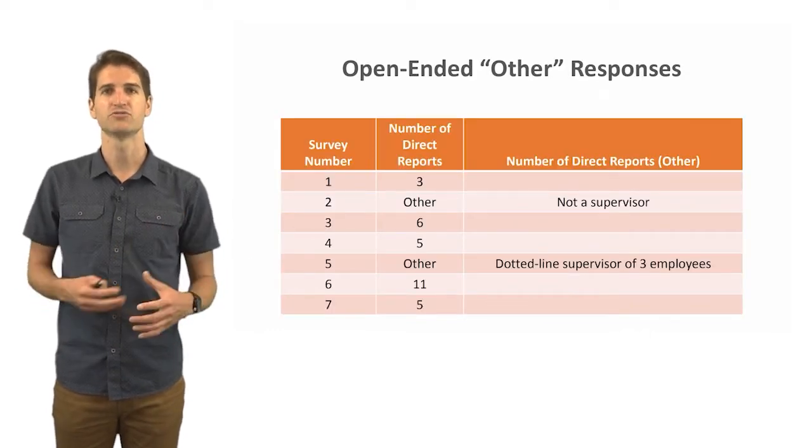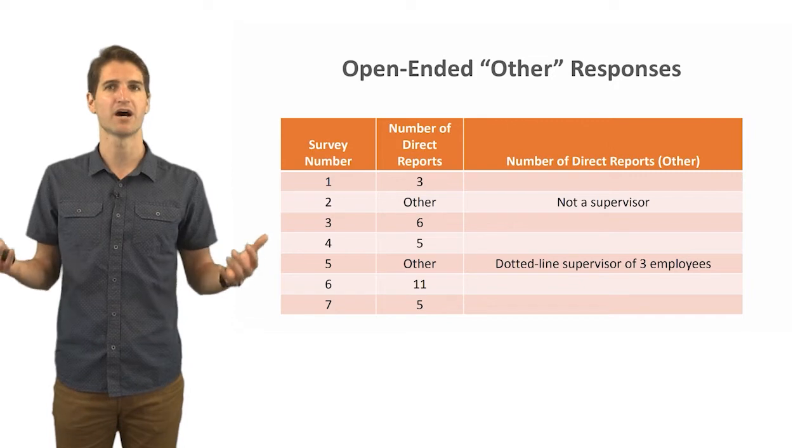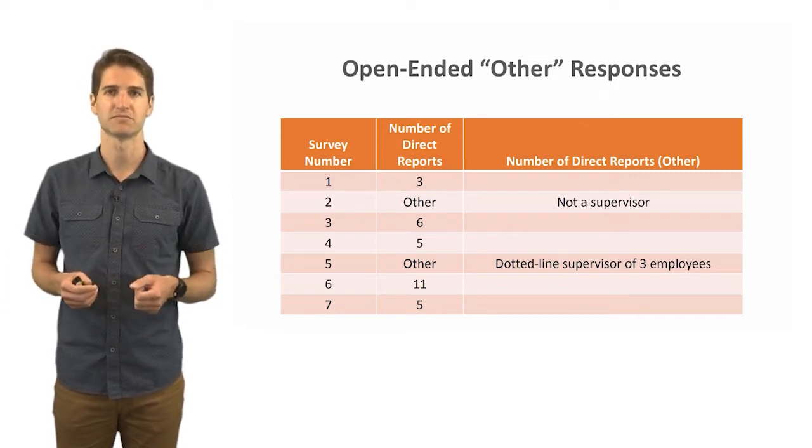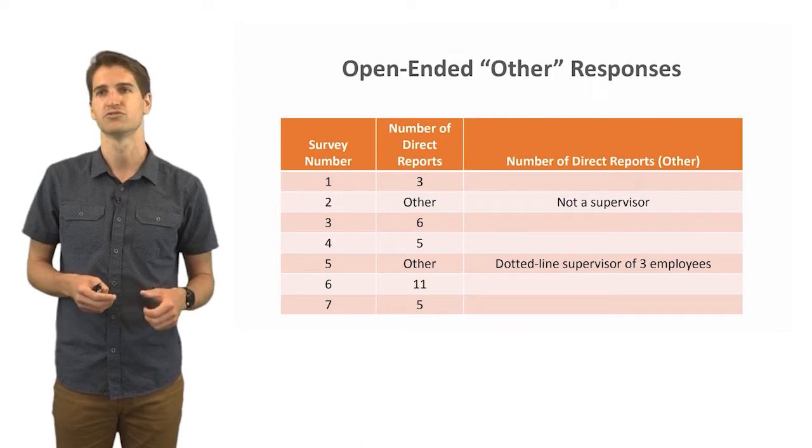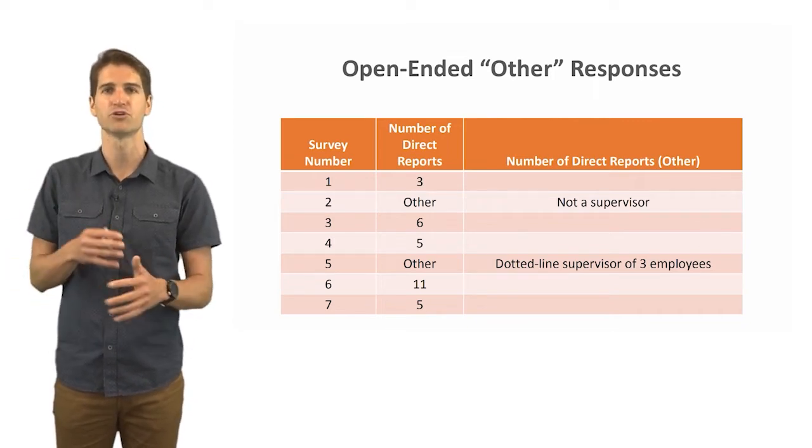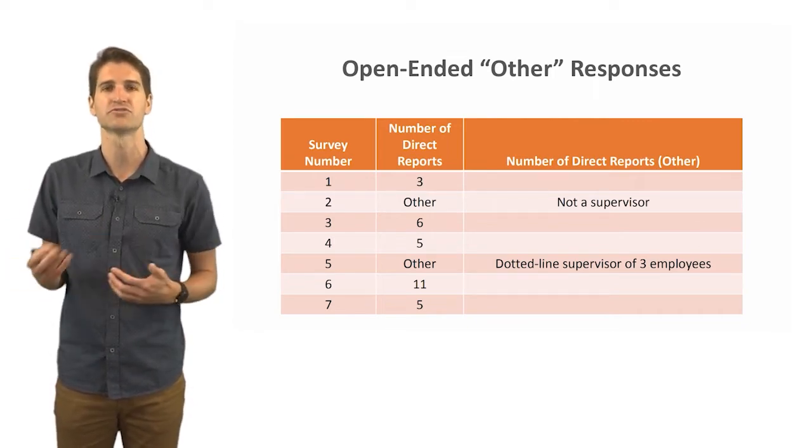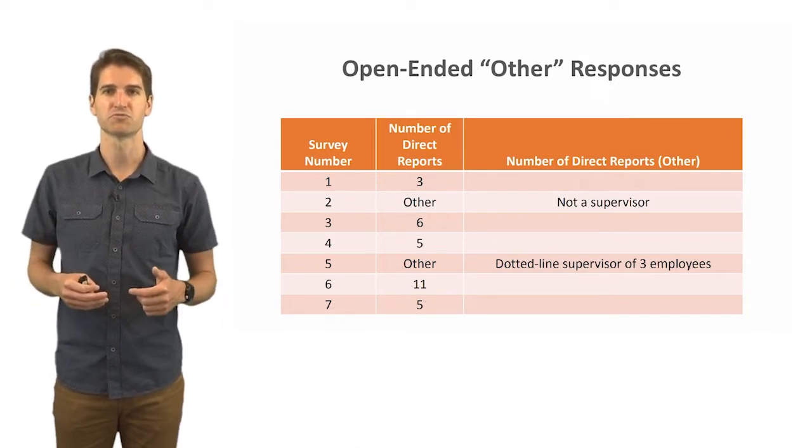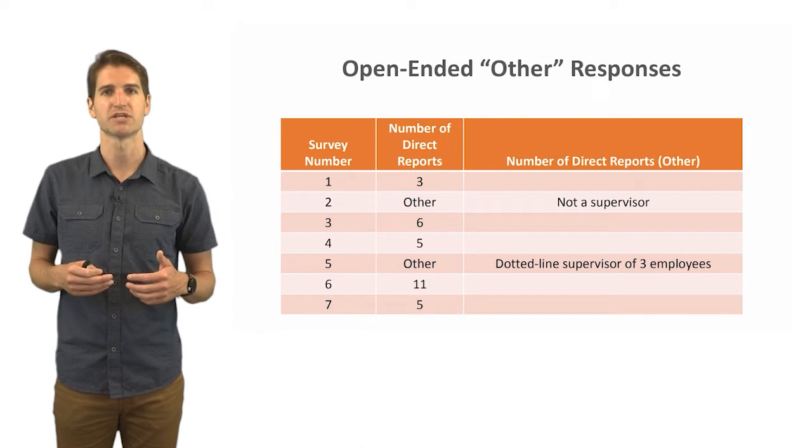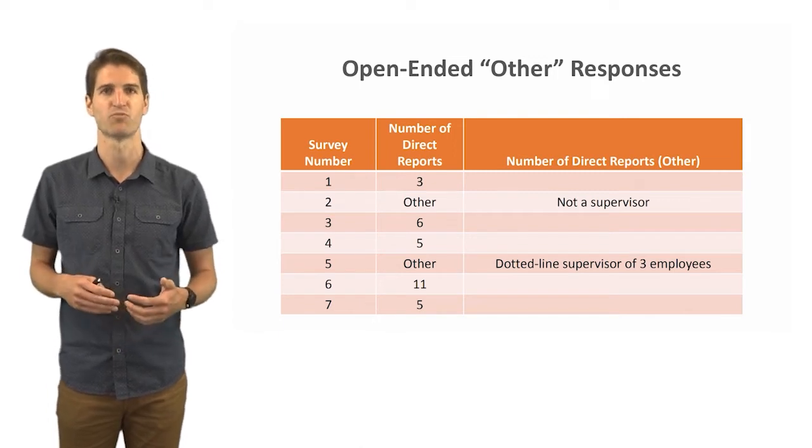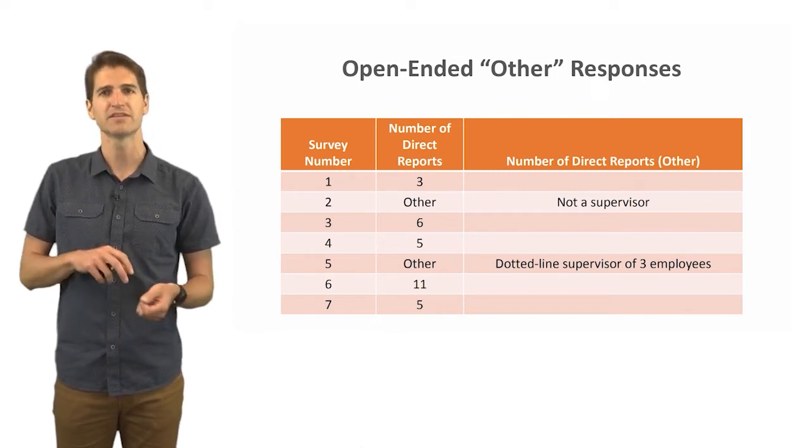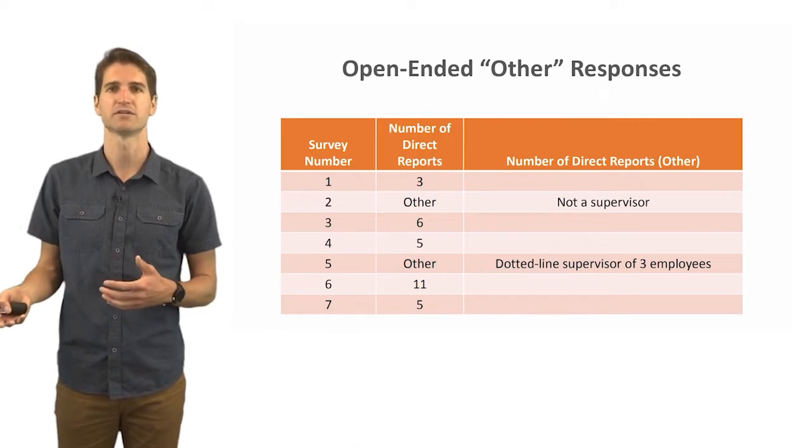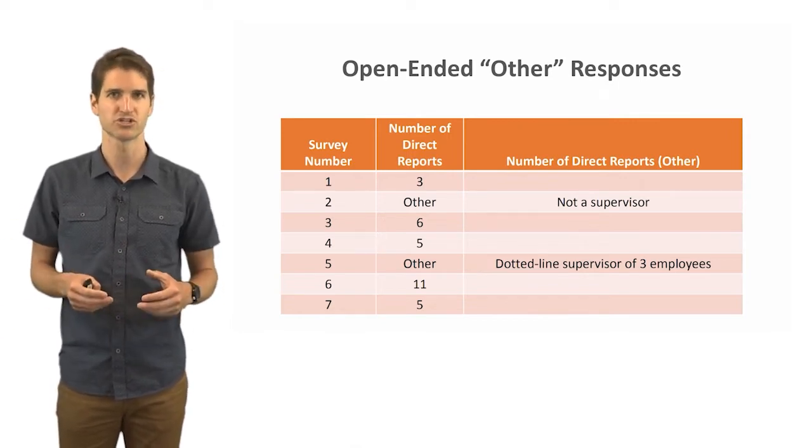Now let's consider what we do during data cleaning with those open-ended other responses. Sometimes you might have, let's say during an employee survey where it's completely anonymous so you don't know who exactly is responding, but you want to know some key information about them. You might include an other response that's kind of a bailout response if something doesn't seem applicable to someone when they're responding to the survey, and then they can write in whatever their particular response is to explain what their individual situation is.